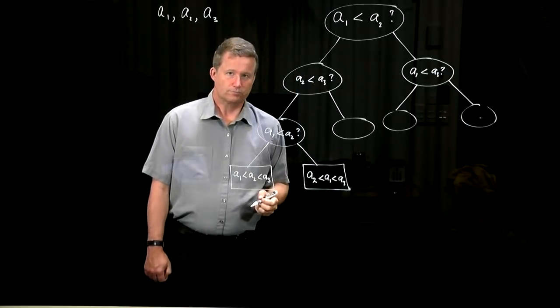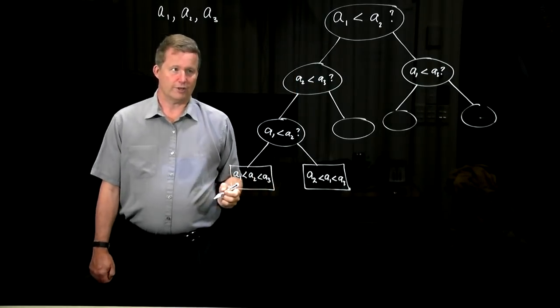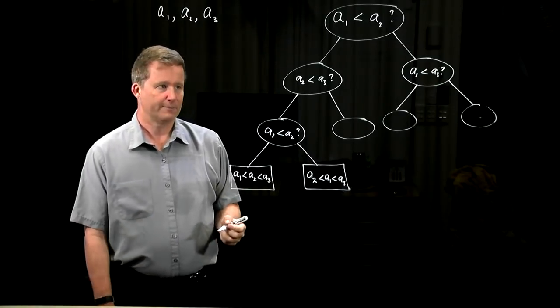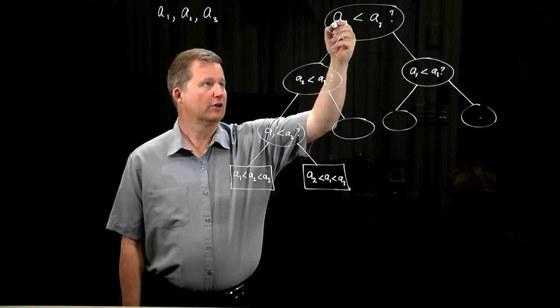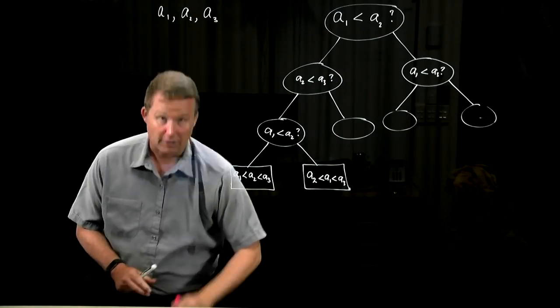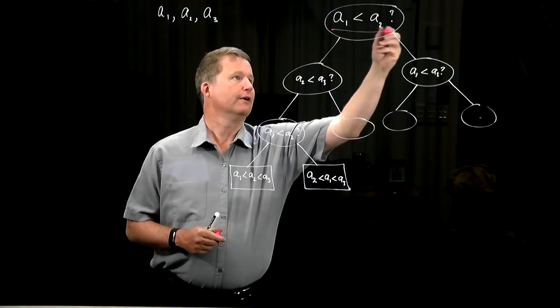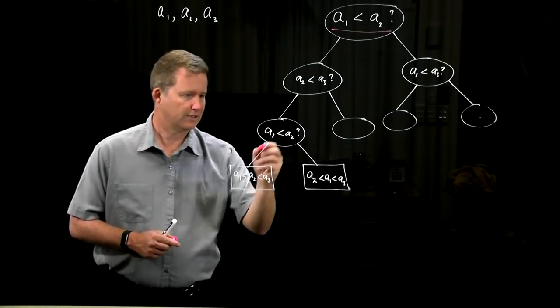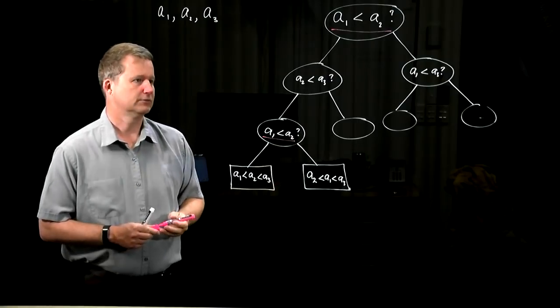We have to do a fair bit of work, but eventually we will get down to the bottom of the tree there. Notice that there's a lot of inefficiency, as we've pointed out before, because here a1 less than a2 was asked, and then we ask it again here, for example.